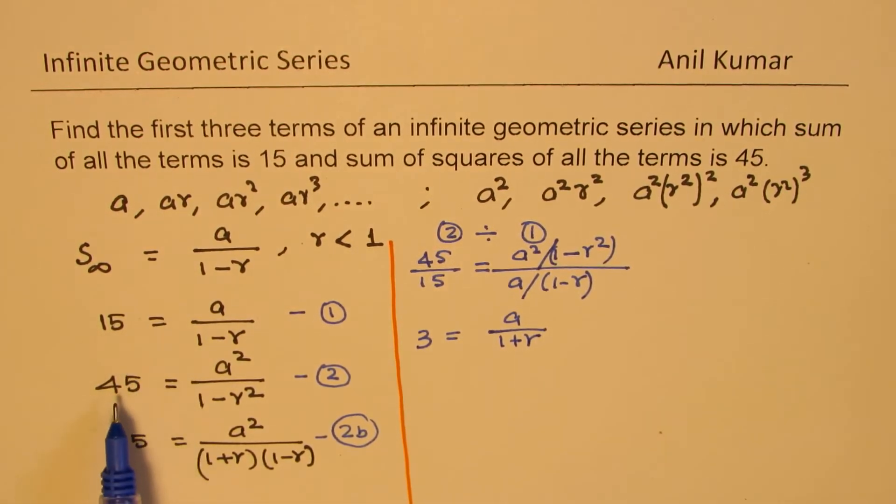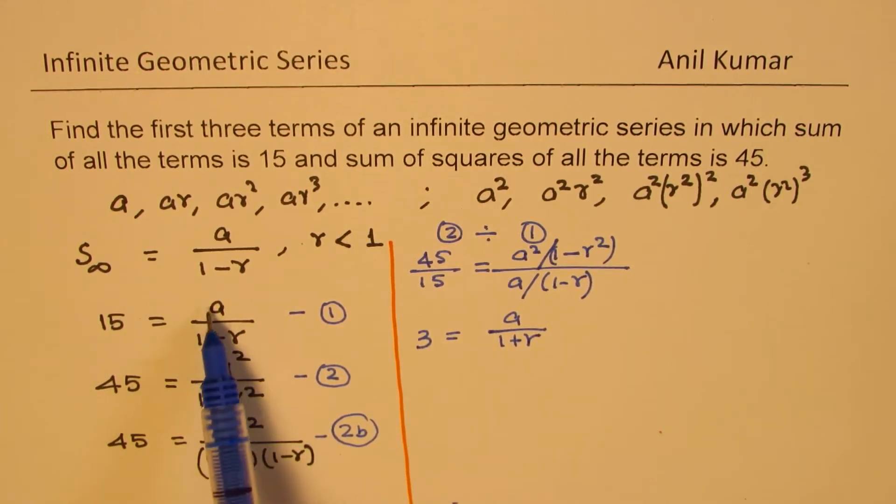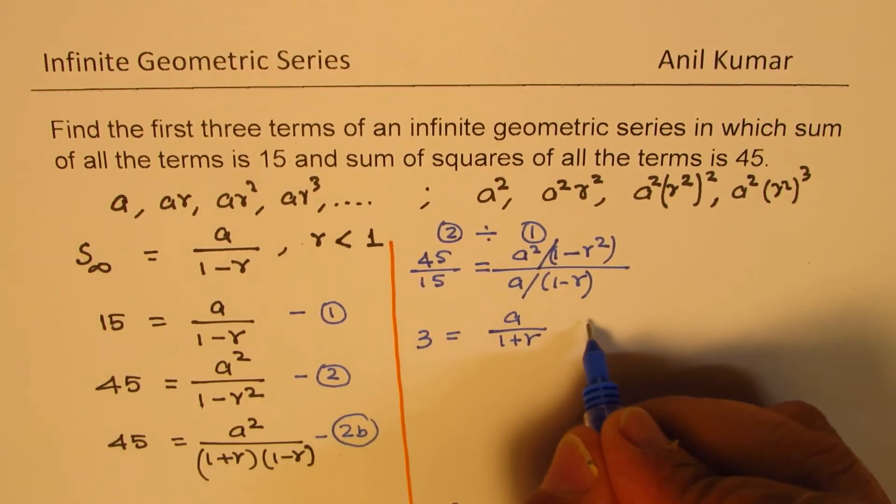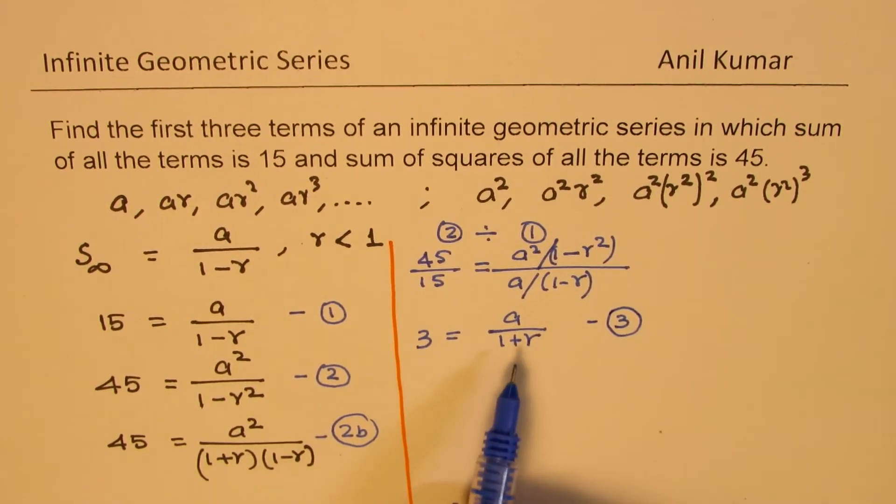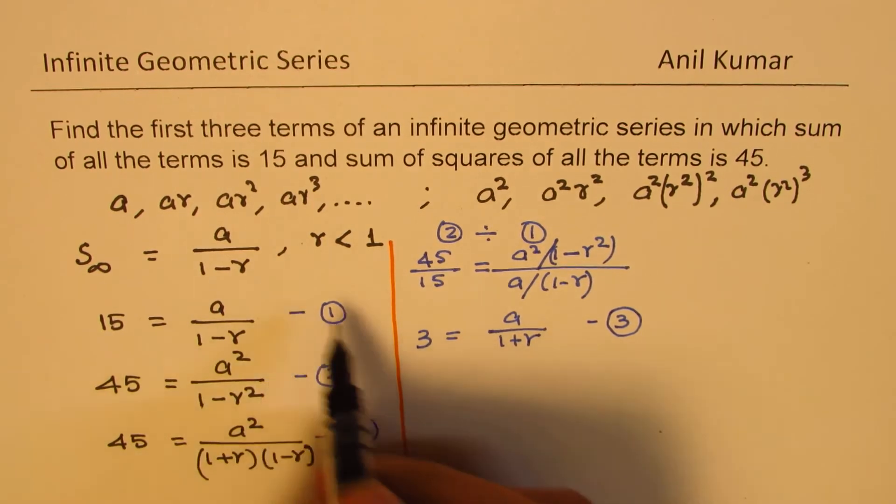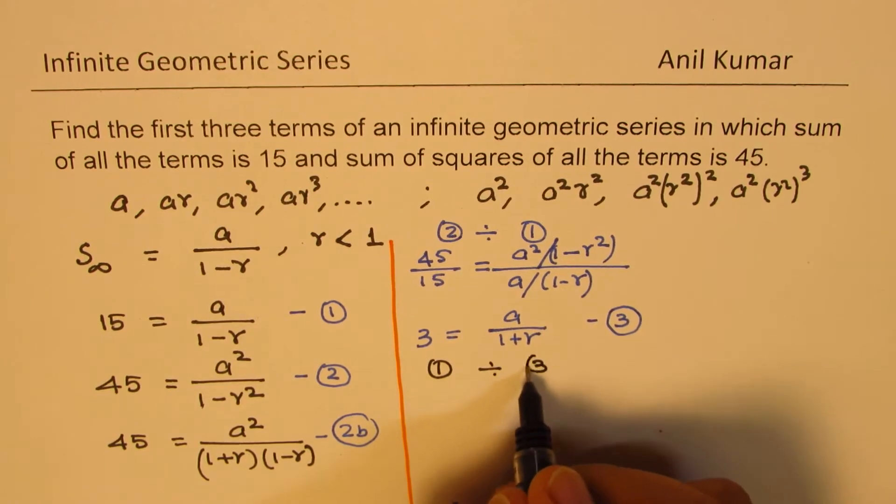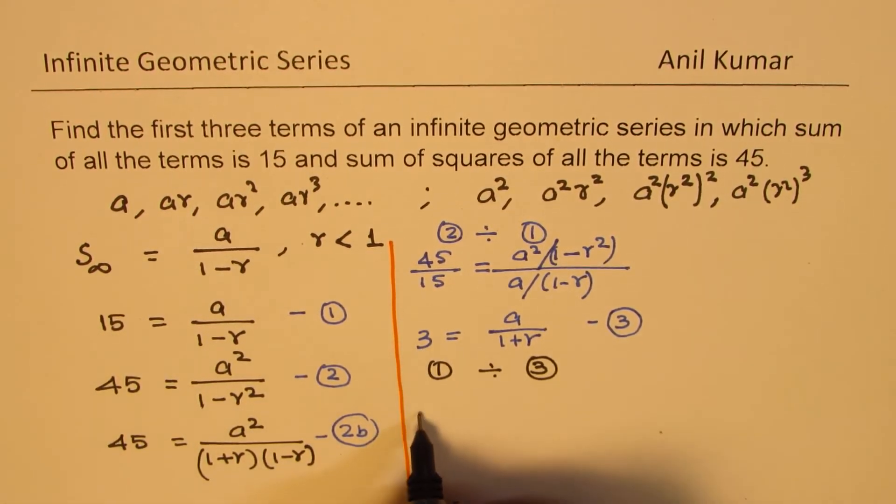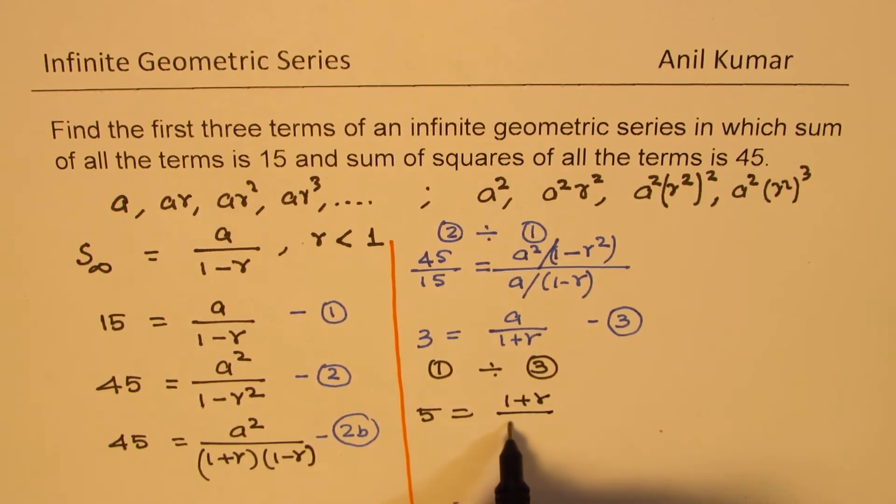So when you divide these two, you get 45 divided by 15 as 3. A cancels, we're left with A. 1 minus R square is product of 1 plus R and 1 minus R. One of them gets canceled, we are left with 1 plus R. So let's call this as our equation number 3. Now, what we could do again is divide equation number 1 with 3. So if I divide 15 by 3, I get 5. A by A cancels. So this is in the denominator, that is in the numerator now. We are left with 1 plus R over 1 minus R. Now we can cross multiply. So we get 5 times 1 minus R equals 1 plus R.